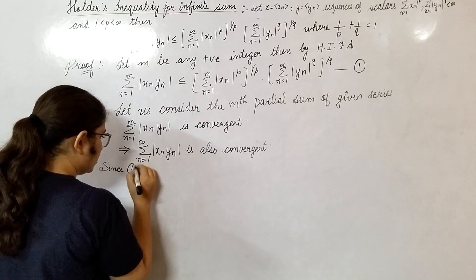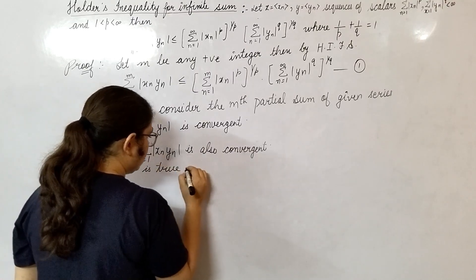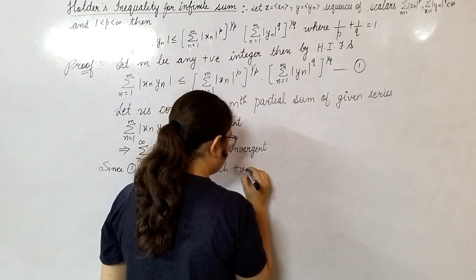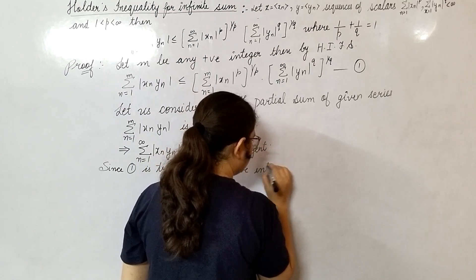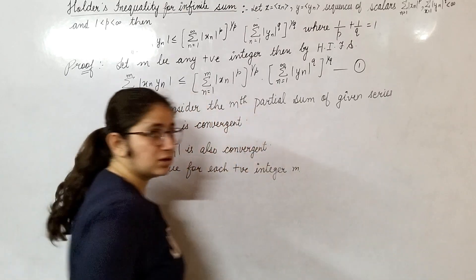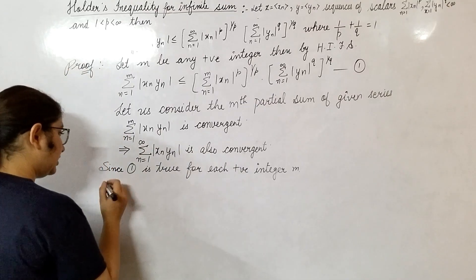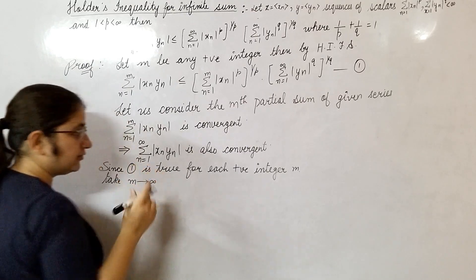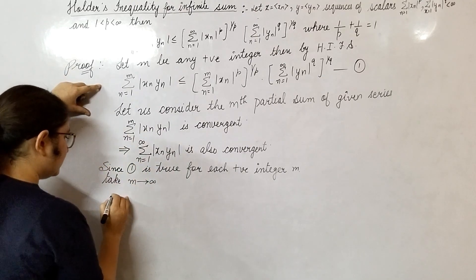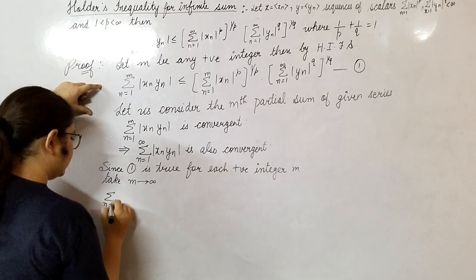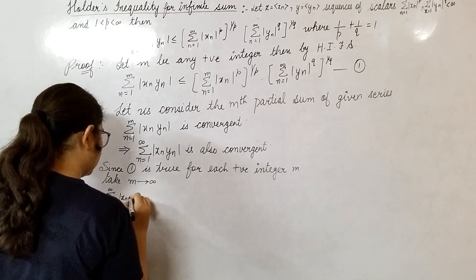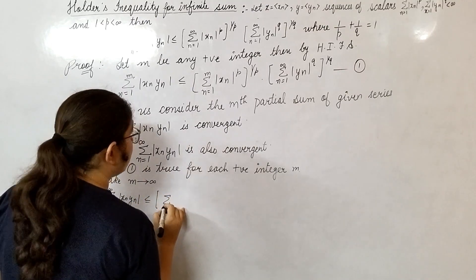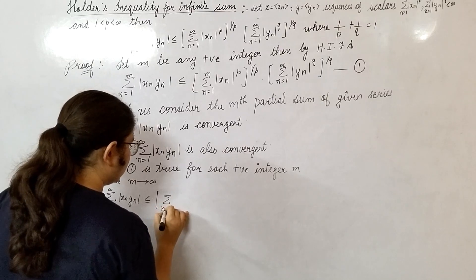Since equation (1) is true for each positive integer m, we will take the limit as m goes to infinity. Then we get: summation n from 1 to infinity of |x_n y_n| is less than or equal to (summation n from 1 to infinity of |x_n|^p)^(1/p) times (summation n from 1 to infinity of |y_n|^q)^(1/q).